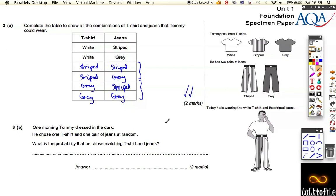And part B, a nice easy two marks. It says one morning Tommy dressed in the dark. Looks like he chose his clothes in the dark as well, but he chose one t-shirt and one pair of jeans at random. What is the probability that he chose matching t-shirts and jeans?